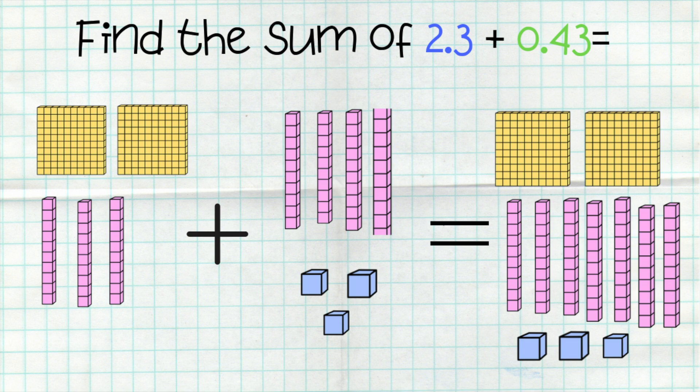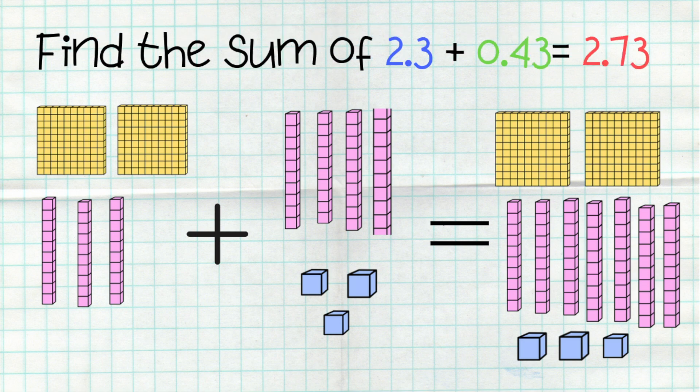Now, I am going to add them together. I have two wholes plus no wholes, so that is two wholes. Then, I have three-tenths plus four-tenths, and it gave me seven-tenths. And three-hundredths plus no-hundredths gives me three-hundredths. So, all together, I have 2.73.